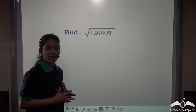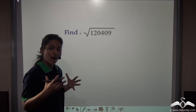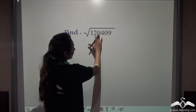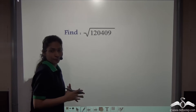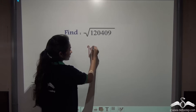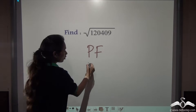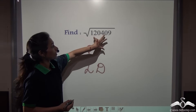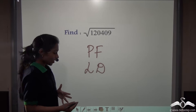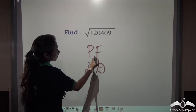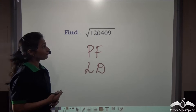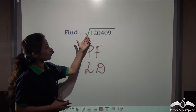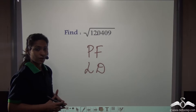You know very well how to find out square roots of large numbers. You can find the square root of 120409 either by prime factorization method or by long division method. But numbers don't exist like this only. There may be a number like 12.0409 — then what will you do? How do we find out the square root of such a number? Let's see.